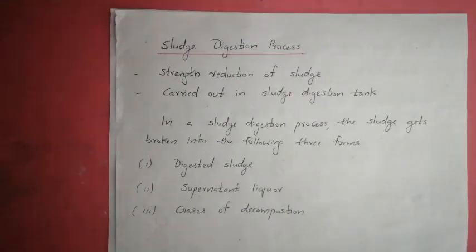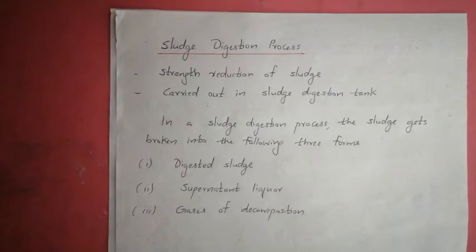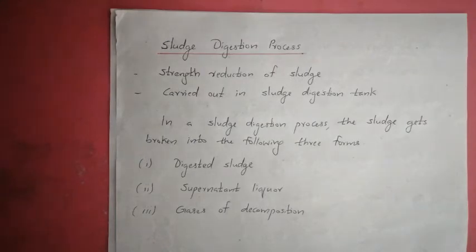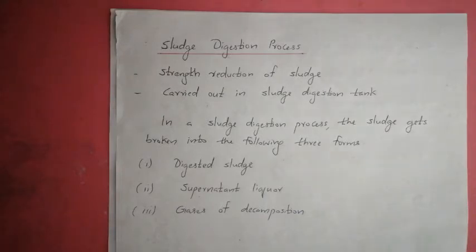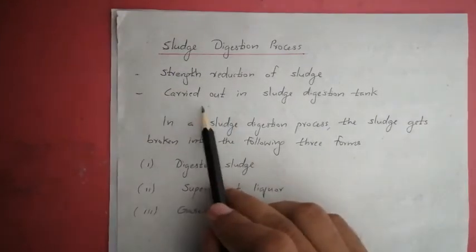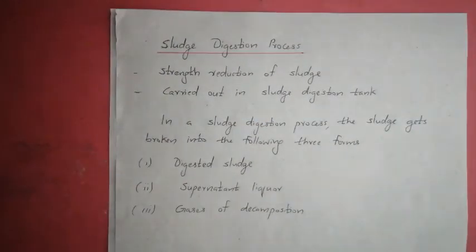We will move on to the next topic: sludge digestion process. In the introduction video we discussed about sludge treatment, which is aimed to achieve two things: volume reduction and strength reduction. Here, sludge digestion process is carried out to reduce the strength of sludge, that is the BOD is removed, which is carried out by anaerobic decomposition known as sludge digestion. This process is carried out in a sludge digestion tank.